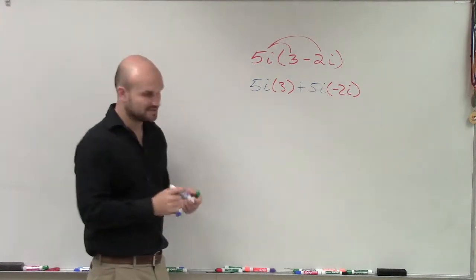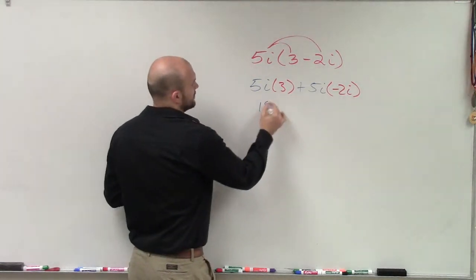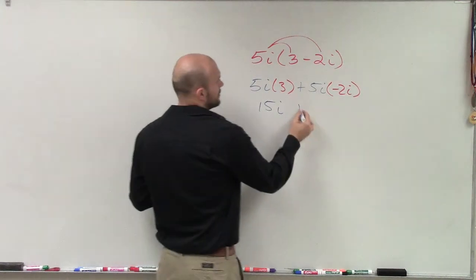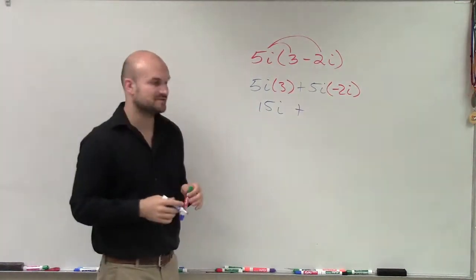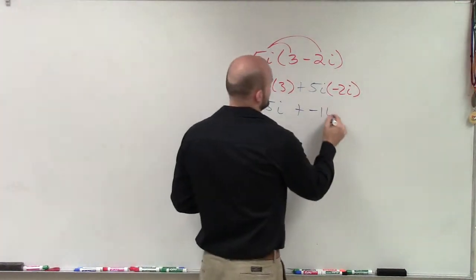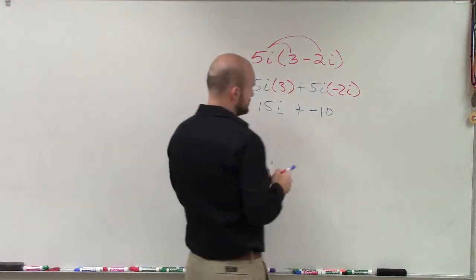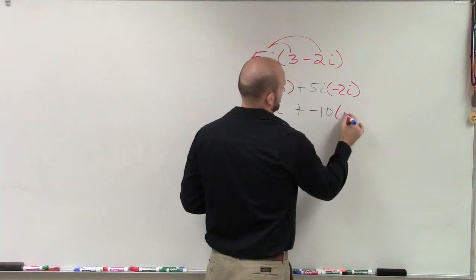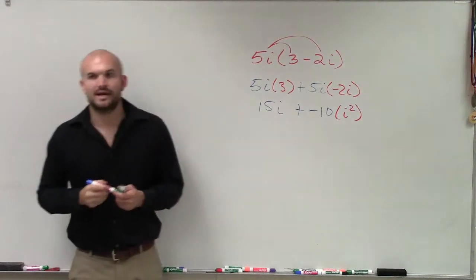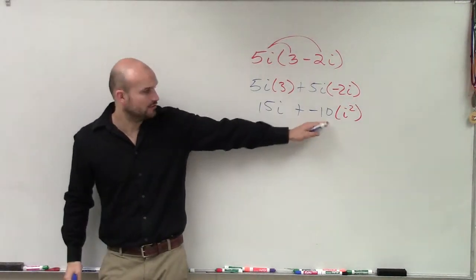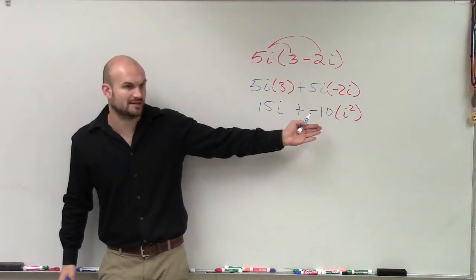Then, 5i times 3 is going to be 15i plus 5i times negative 2i is going to be a negative 10i squared. Right? But now, ladies and gentlemen, we've talked about this. Really, plus a negative is the same thing as subtracting, right? So, I can rewrite that as a subtraction problem.